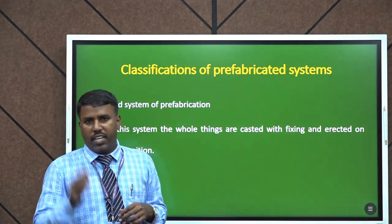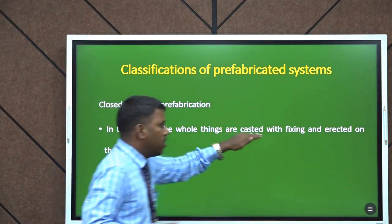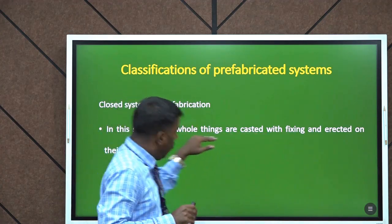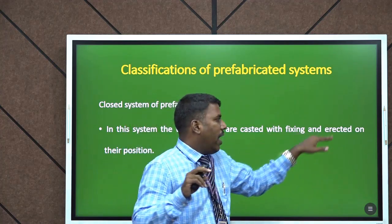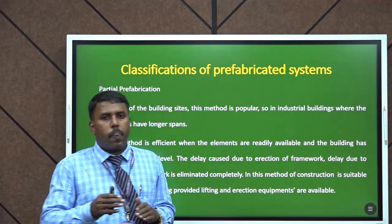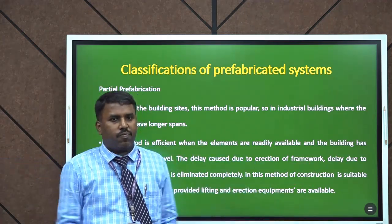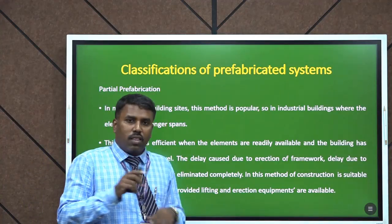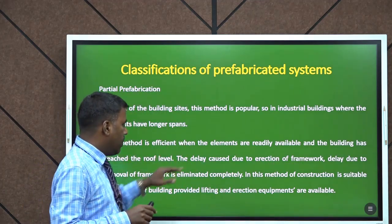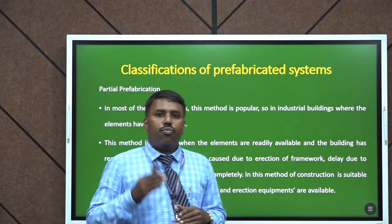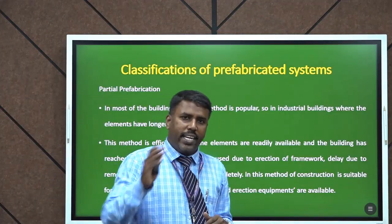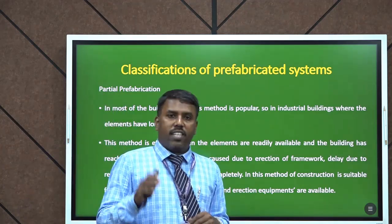The next one is closed system of prefabrication. Here the whole structure is cast with fittings — that is why it is called the closed system — and everything is erected on the site. The next one is partial prefabrication, which is very common in industrial buildings with very lengthy spans. This method is efficient when elements are readily available and the building has reached the roof level. The delay caused by erection of formwork is eliminated, and this method is suitable for any type of building provided lifting and erection equipment are available.